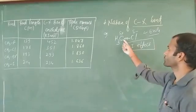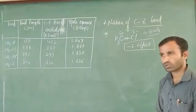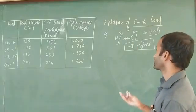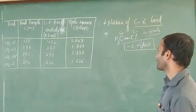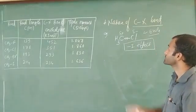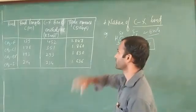The electrons move from carbon to chlorine because chlorine is the more electronegative element. You can apply the same reasoning for fluorine or iodine. This is the nature of the carbon-halogen bond.